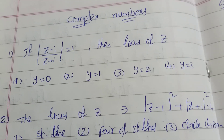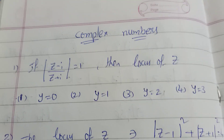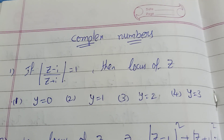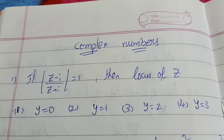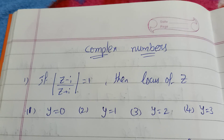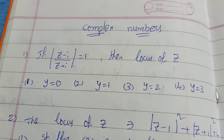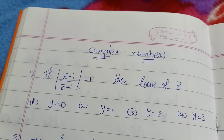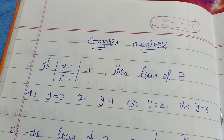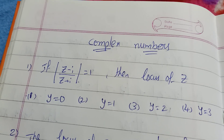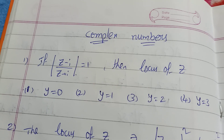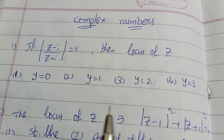Hi students, how are you? Today I am going to discuss complex numbers. Complex numbers: z equals a plus ib, and the modulus of z equals root of a squared plus b squared.